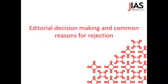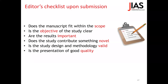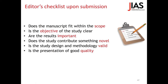How do editors make their decisions, and what are common reasons for rejection? Most journals do a pre-assessment of manuscripts before deciding to send them to peer review, to avoid wasting time for everyone. Items editors may look at include: does the manuscript fit with the scope of the journal, is the objective of the study clear, are the results relevant, is the study novel, is the methodology sound, and is the presentation of good quality — that is also very important, more than you think.